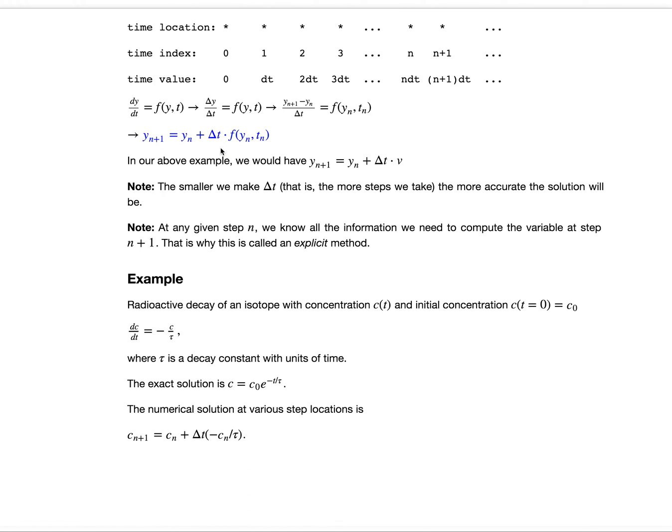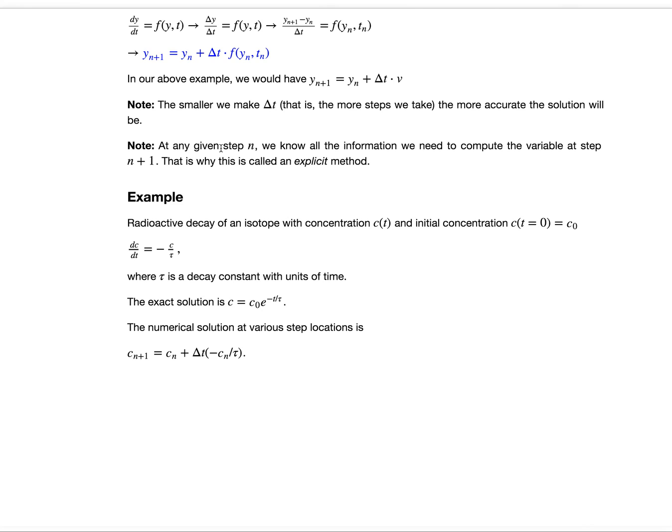To give another example, we can look at radioactive decay of an isotope with some concentration c of t, and initial concentration c at time 0 equals c0. Here the differential equation would be dc dt equals minus c over tau, where tau is a decay constant with units of time. The exact solution is c equals c0 times e to the minus t over tau. The numerical solution at various step locations would be cn plus 1 equals cn plus delta t times the quantity minus cn over tau. In this case, f of yn comma tn is minus cn over tau.